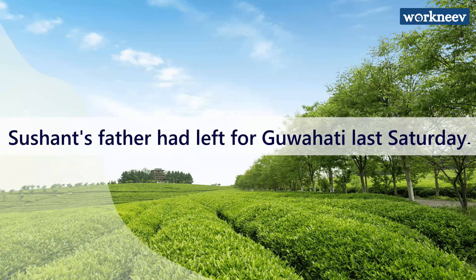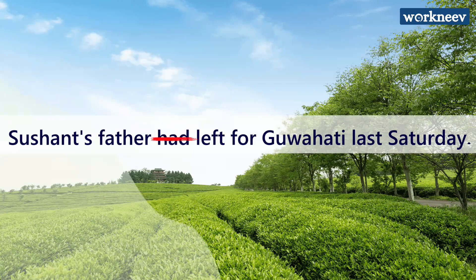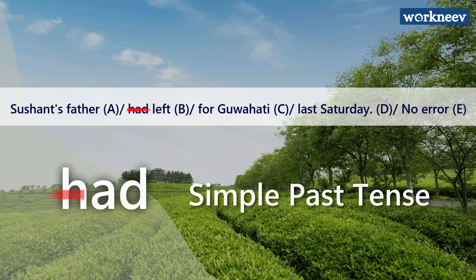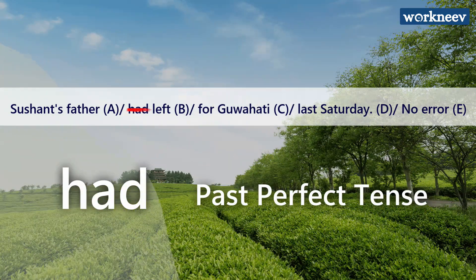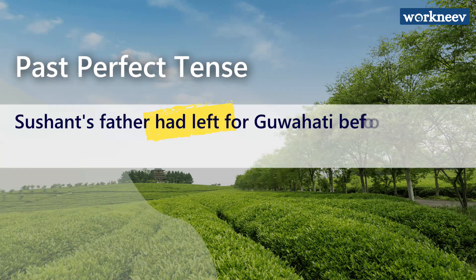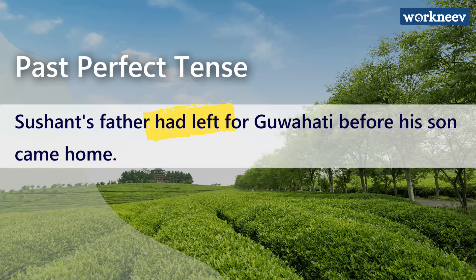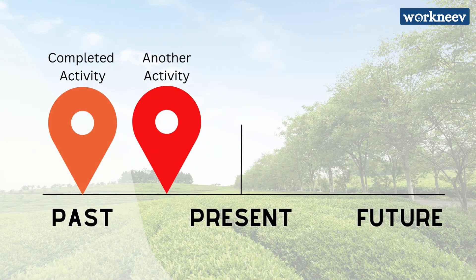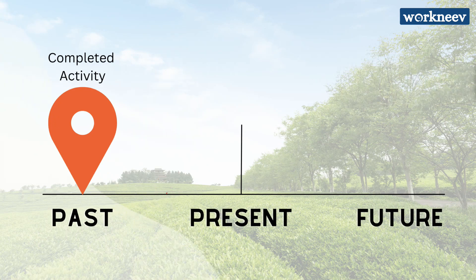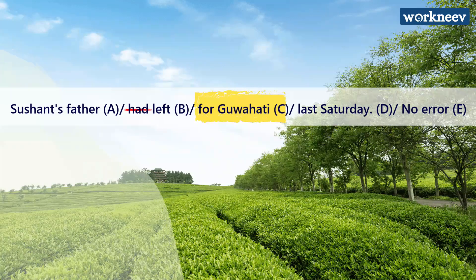The correct sentence would be: 'Sushant's father left for Guwahati last Saturday.' The reason is improper use of tenses. The sentence is in simple past and we cannot use 'had' in the simple past tense. 'Had' is used when the sentence is in the past perfect tense — for example: 'Sushant's father had left for Guwahati before his son came home.' A simple rule: if you are talking about two past events where one took place before the other, use 'had' to describe the first event.